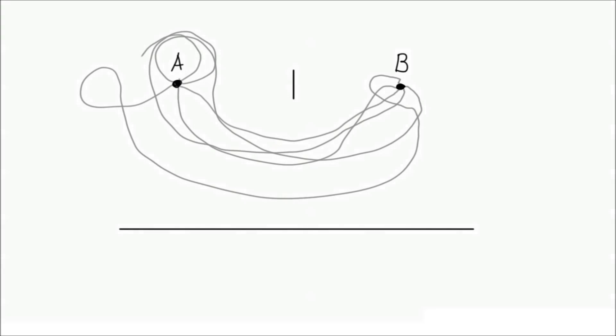One, we'll only consider paths which bounce off the screen. Although this, this, this, this, this, and this are all possible paths, they all almost cancel out, and you'll see why later.